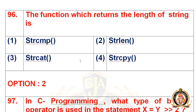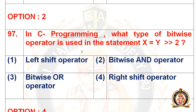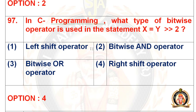Move on to the 96th question: the function which returns the length of a string is dash. Options: strcmp, strlen, strcat, strcpy. The right option is strlen for the 96th question. Move on to the 97th question: in C programming, what type of bitwise operator is used in the statement x = y >> 2? Options: left shift, bitwise AND, bitwise OR, right shift. The right option is right shift operator.